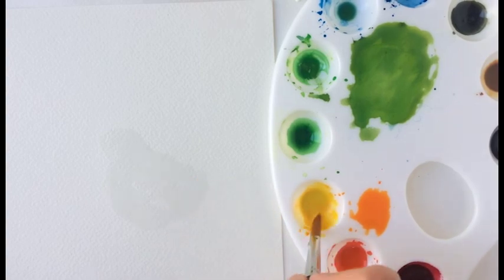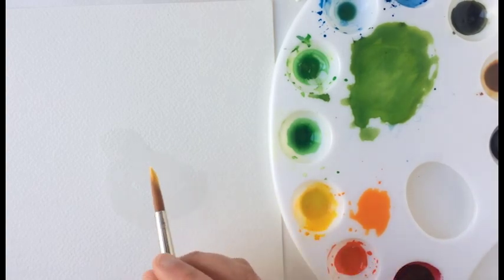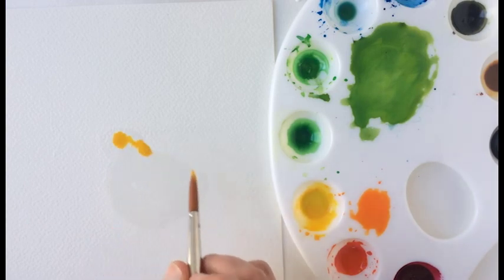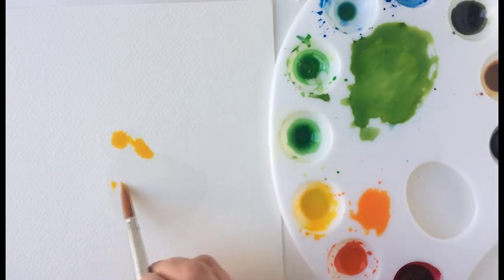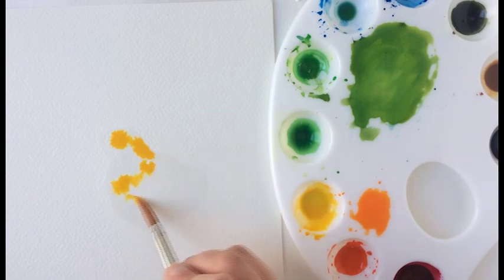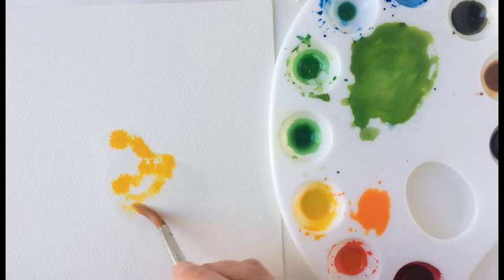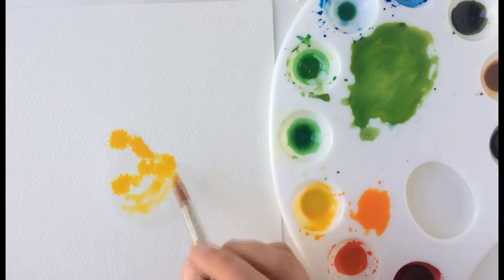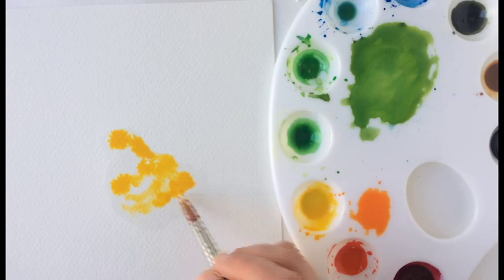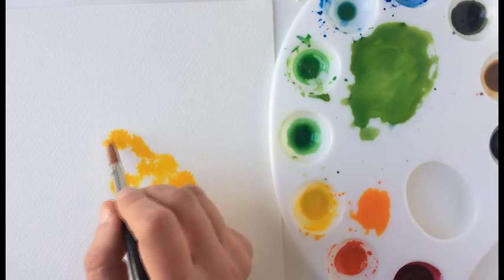So with wet on wet, the advantage is that you can really move that pigment around. You'll see that it immediately starts to spread out once it touches the water. Just simply dabbing my pigment on, you'll notice I'm not covering the whole area with pigment, I'm just kind of dabbing it in places.